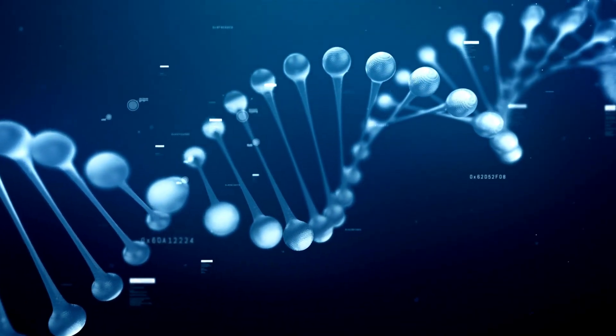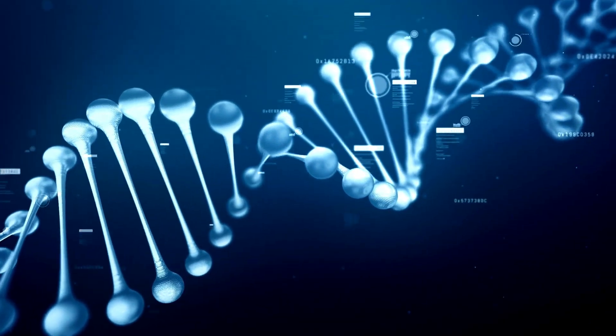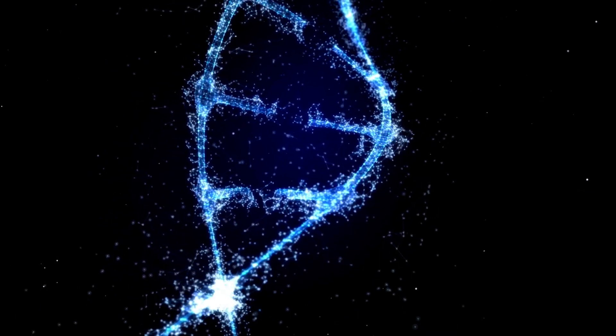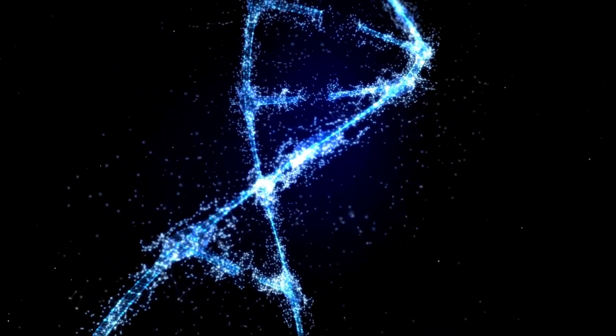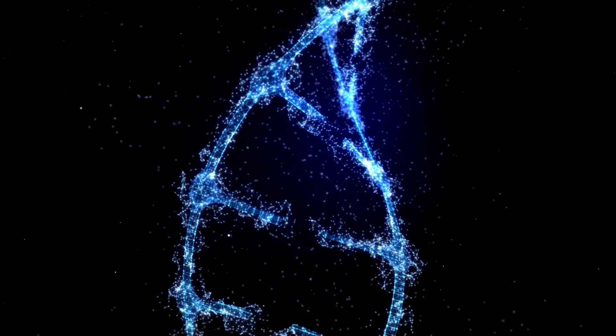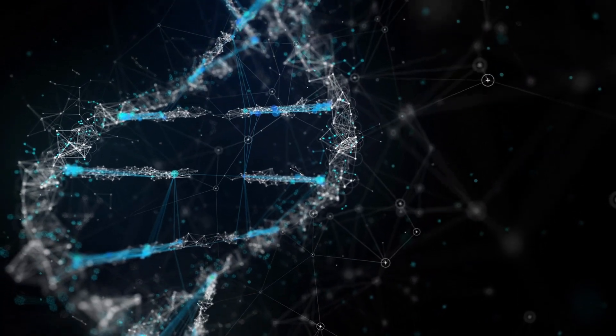It consists of two complementary strands of nucleotides that wind around each other in a helical shape. The nucleotides are held together by hydrogen bonds between complementary base pairs: adenine with thymine, and guanine with cytosine.